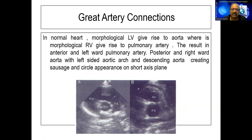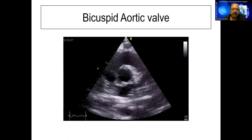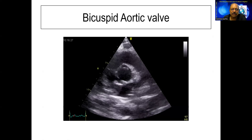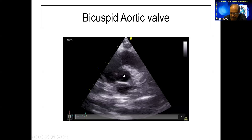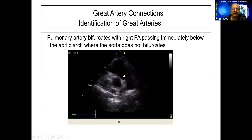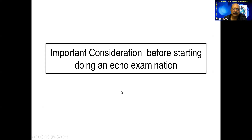When we open up the D-loop and if it's pointing toward the left-hand side, we say situs solitus. Then we identify the morphological structures and talk of great artery connections. In this view we can identify the bicuspid aortic valve. The pulmonary artery always bifurcates to left and right — left on one side, right on the other — the bifurcation of the pulmonary artery.